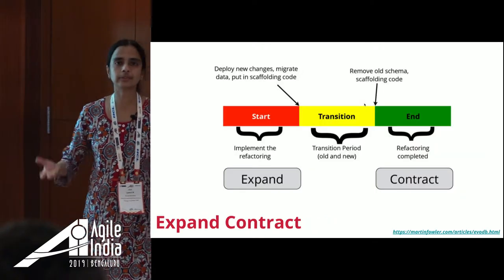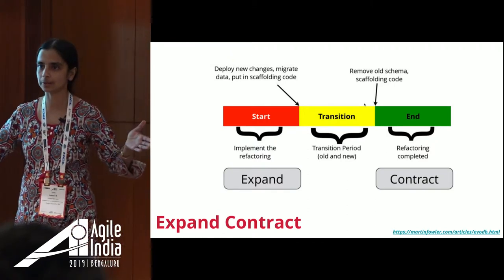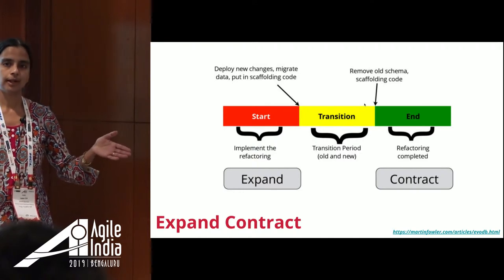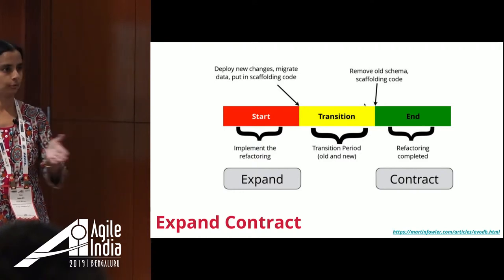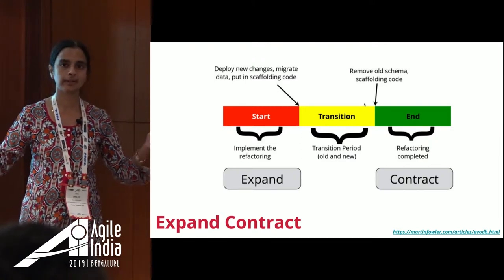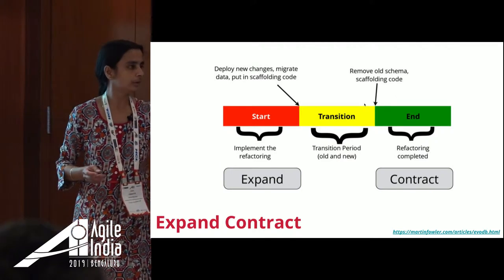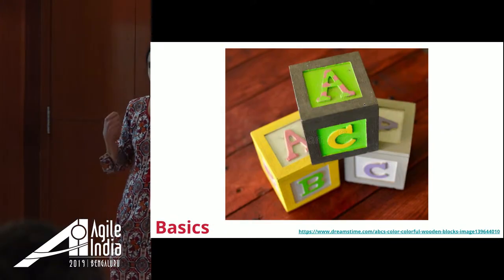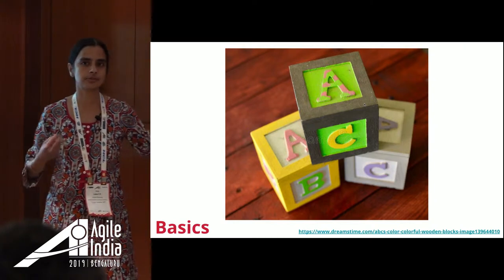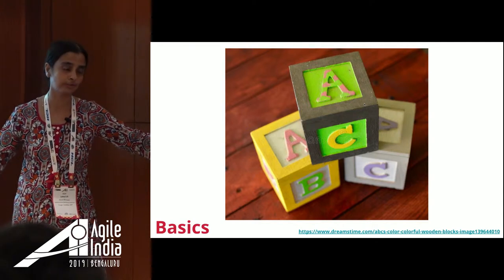This is the idea of expand-contract: you have parallel implementation — the earlier code as well as the new code. You observe for some time, make sure all dependencies have moved to the new way of implementing, and then you contract to the new way. What is required for this? It's a simple concept, but there are some prerequisites for doing it.